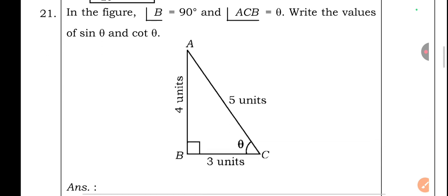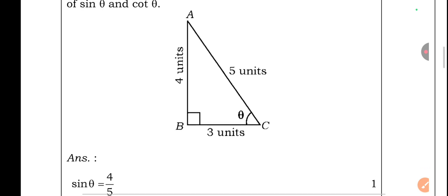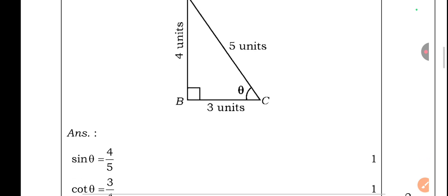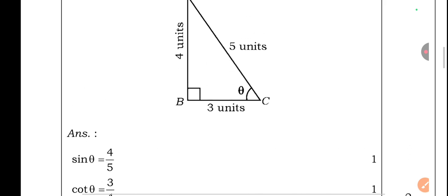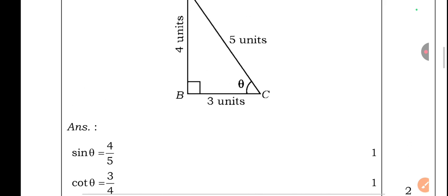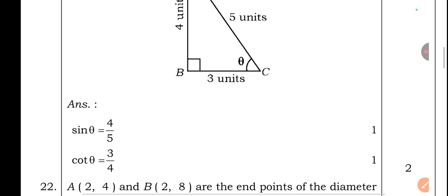Question 21: In the figure, angle B = 90° and angle ACB = θ. Given AB = 4 units, AC = 5 units, BC = 3 units. Write the values of sin θ and cot θ. sin θ = 4/5 and cot θ = 3/4.